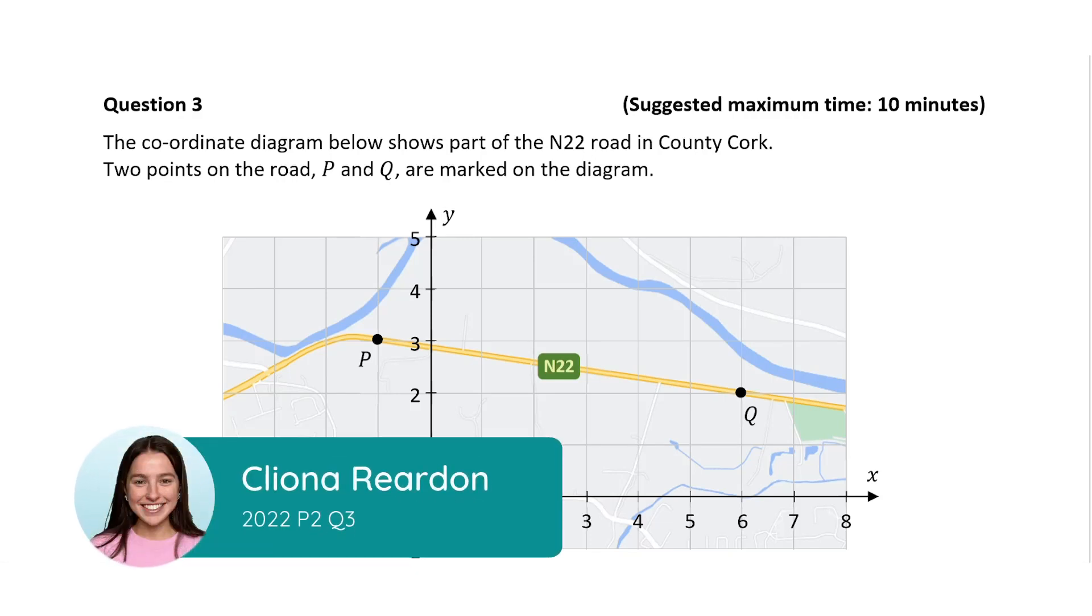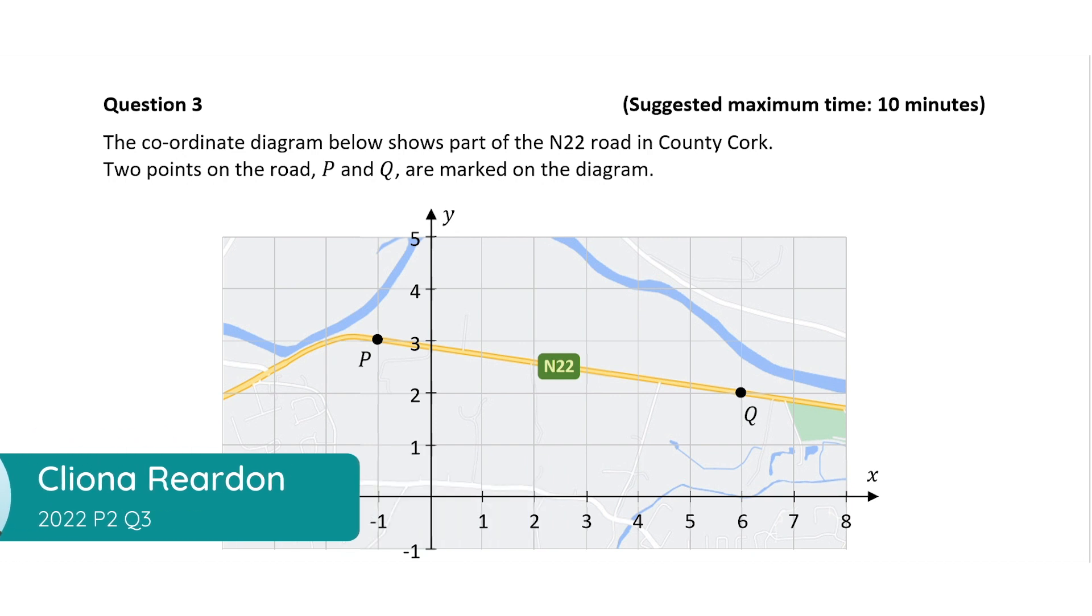Hi everyone, Cleena here. Welcome to this video. Today I'm going to be taking you through the solution to question 3 from this junior cert higher level paper, and this question is based on coordinate geometry. So let's get right into it. We're told that the coordinate diagram shows a part of the N22 road in Cork. Two points in the road P and Q are marked in the diagram. We can see them here, P and Q.